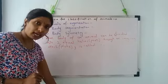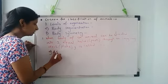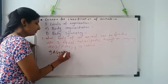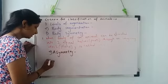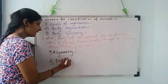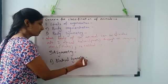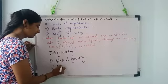Now on the basis of that, body symmetry is of three types. First, asymmetry. Second, bilateral symmetry. And third, radial symmetry.